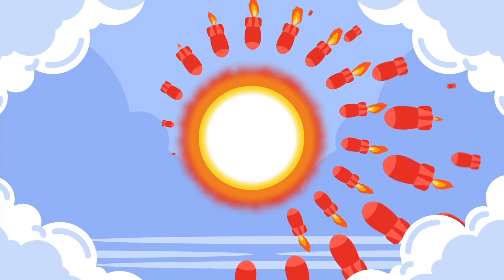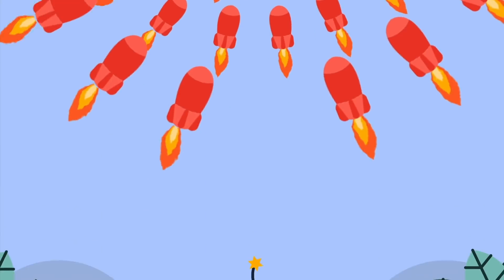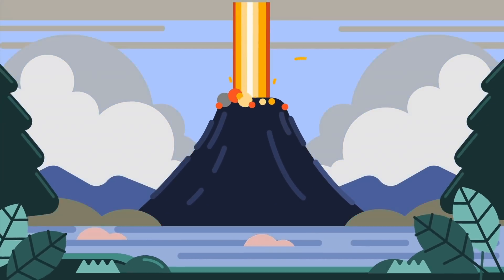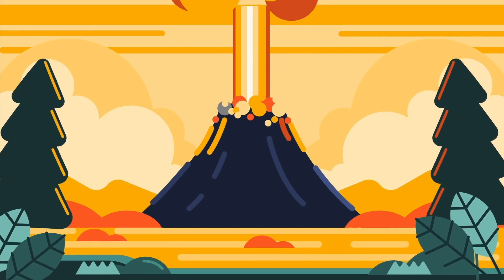Firing every nuke on Earth at the Sun would be like setting off a tiny firework in the middle of an erupting volcano. But what if we created a nuke more powerful than the Sun? Could we ever destroy the Sun?